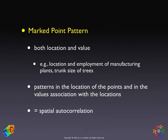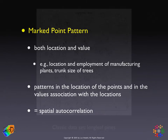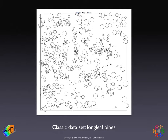Spatial autocorrelation is the coincidence of proximity in location with similarity in value. A classic dataset that analyzes a marked point pattern — where the value is referred to as the mark — is a set of locations of longleaf pine trees. This is one of the classic datasets used in many textbooks and also included as sample data in several of the R packages we will be using in the lab. So a marked point pattern is one where we have both location and value.